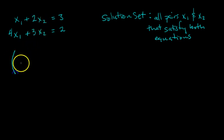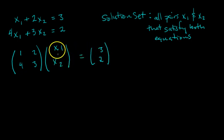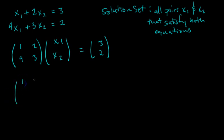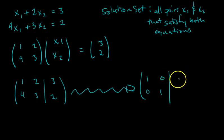We have the matrix equation where we do a matrix times the vector (x1, x2) equals (3, 2). If this looks foreign, check out my video on the different ways to represent a linear system. But we're actually not going to use this — we're going to use the augmented matrix representation, which has a vertical line for the augmented column. We want to transform this augmented matrix somehow to look a little bit different.